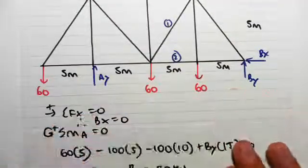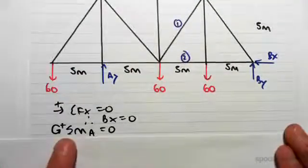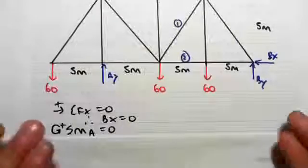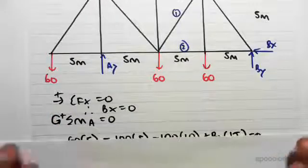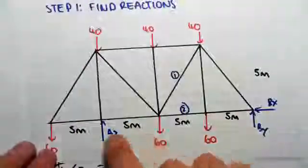Bx is the only reaction, so therefore Bx equals zero. There's no other x force. We're then going to take sum of the moments about A. It's going to be the exact same process we've done before, so I'm going to go through a little bit quicker.